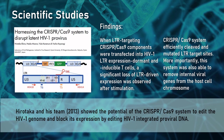Harnessing the CRISPR-Cas9 system to disrupt latent HIV-1 provirus: Hirotaka and his team showed the potential of the CRISPR-Cas9 system to edit the HIV-1 genome and block its expression by editing HIV-1-integrated proviral DNA. Their study successfully disrupted the expression of HIV-1 provirus. More importantly, this disruption not only restricted transcriptionally active provirus, it also blocked the expression of latently integrated provirus. The results suggest that the CRISPR-Cas9 system may be a useful tool for curing HIV-1 infection.